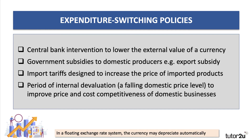There are loads of examples you could use for expenditure switching policies. One could be if the country is running a managed exchange rate system and the central bank decides to intervene in the currency market to devalue the external value of the currency. In a floating exchange rate system, the currency may actually depreciate partially automatically when there's a big trade deficit.